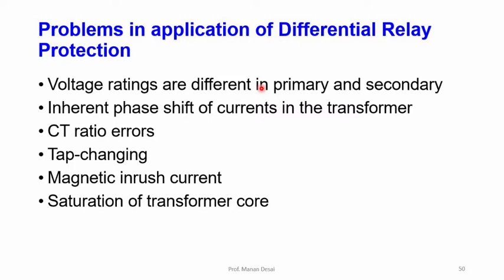Another problem is the inherent phase shift of currents in the transformer, where primary and secondary currents are not in phase. In three-phase transformers connected in delta-star, a phase shift occurs. With connections like Dy11 or Dy1, zero sequence currents are produced. To make the scheme immune to secondary external earth faults, the CTs on the star side should be connected in delta.